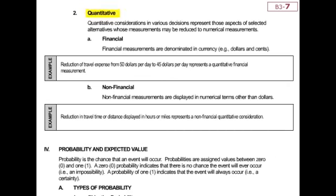Now go to the top of page seven. This is what we're most comfortable with: quantitative relevant costs. I want you all to notice in the second line of number two, many times quantitative considerations involve numerical measurements. Now we're most comfortable with letter A, financial, where that numerical measurement is considered to be a currency.